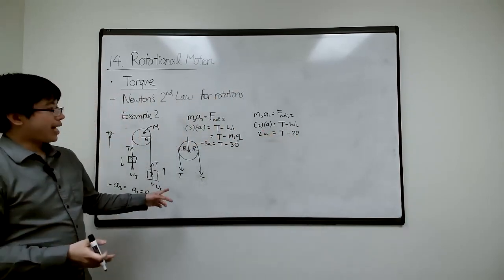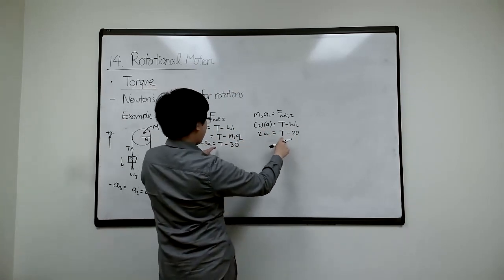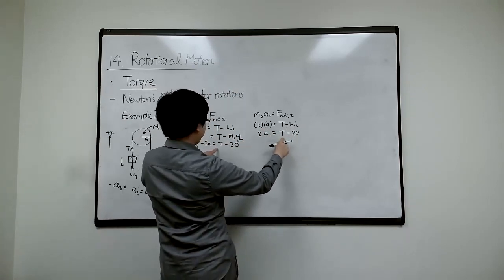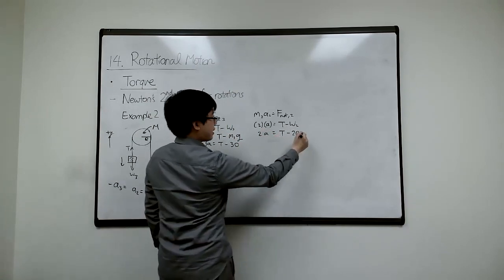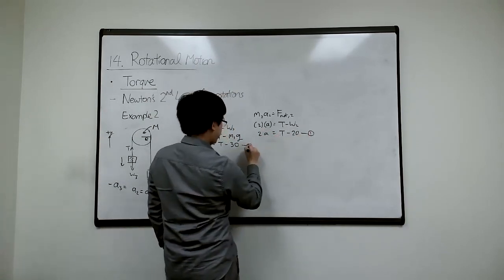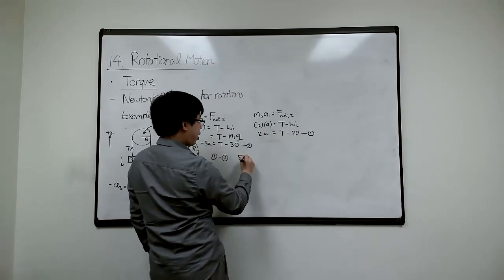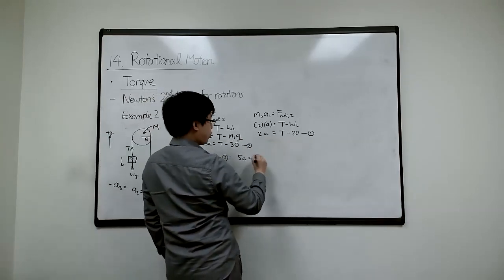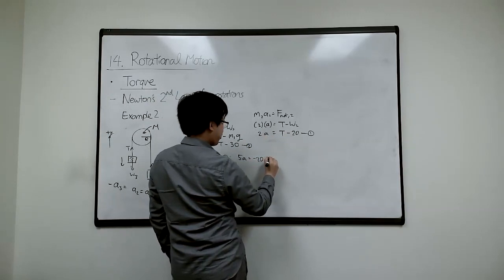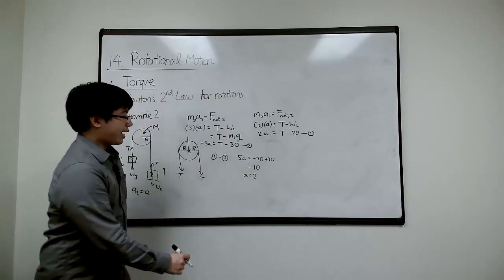What do I want? I want T, but it looks like it's easier to calculate A first. So I can add or subtract. Let's take this one. Let's call that equation 1, equation 2, and have 1 subtract 2. We'll have 5A on this side because 2A subtract negative 3A. And then we have this subtract this, so minus 20 subtract, so add 30. That's 10. So A is 2.